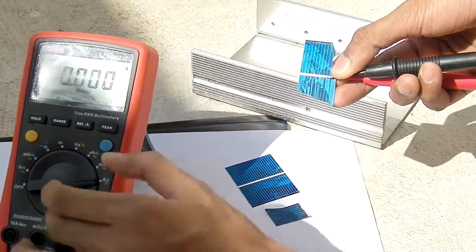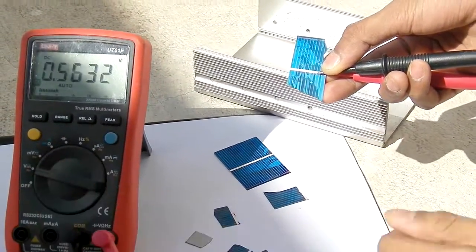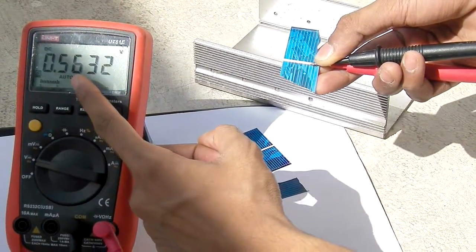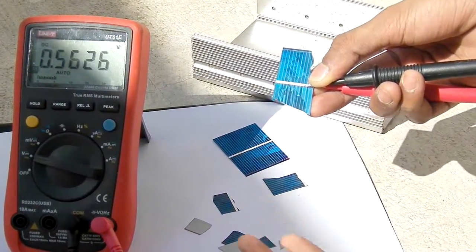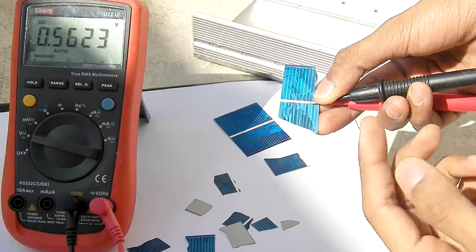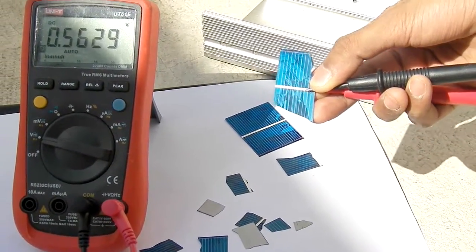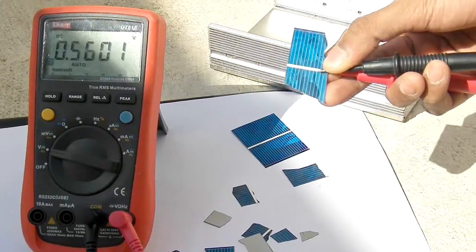...you will surely find that the voltage of this solar cell is 0.5 volts. The voltage doesn't change, but if you break the solar cell, the current will change. So that is the effect of broken cells.